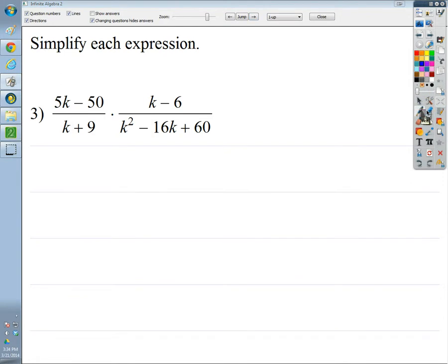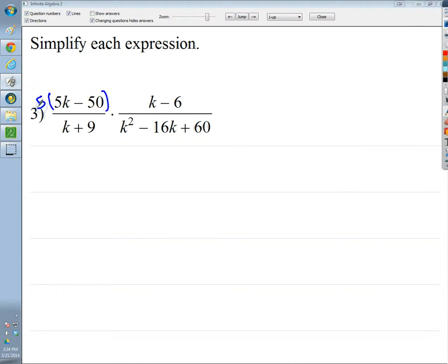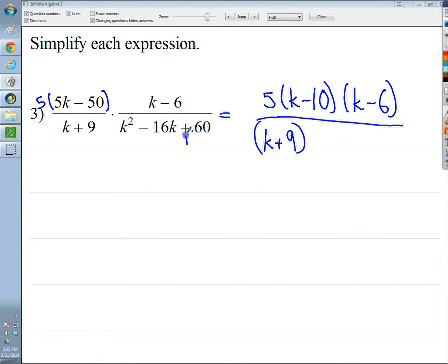So in the next one, I'm going to look for my top numerator as 5k minus 50. Well, I know this section has a, I could pull a 5 out. So I'll end up with 5 times k minus 10 and then k minus 6. On the bottom, I have to do a little bit of factoring work. But before I do that, I'm going to go ahead and put k plus 9 in its own little parentheses. Now, I need to factor this. This says both signs are going to be the same. This says they're both negative.